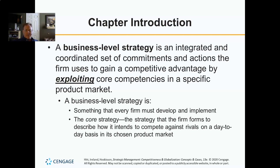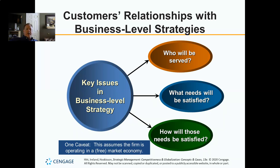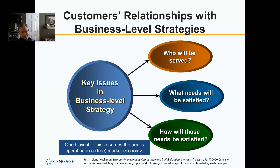In business level strategy we need to address three things: number one, who we're going to serve — who are our customers; number two, what needs or wants of that customer we'll attempt to satisfy; and third, how we satisfy those needs. We have to be working in a free market, because if the government dictates the products, customers, and prices, we're in a command economy — where the government controls all the resources and decides everything.